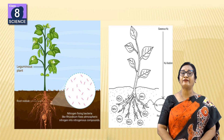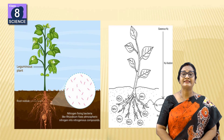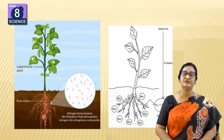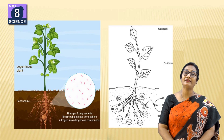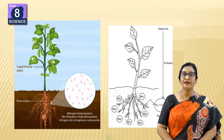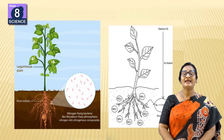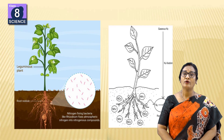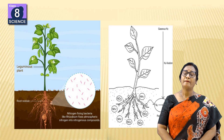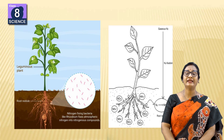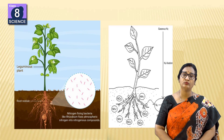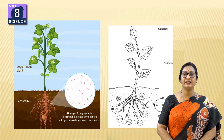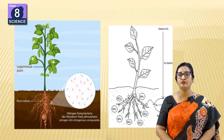The nitrogen present in the atmosphere cannot be directly absorbed by us; we depend on various types of microorganisms for this. The most common example is Rhizobium. These microorganisms convert atmospheric nitrogen into nitrates in the soil, which then enter plant bodies. Rhizobium lives in plant roots, makes its home there, and in return provides nitrogen to the plants, receiving shelter, water, and food from them.